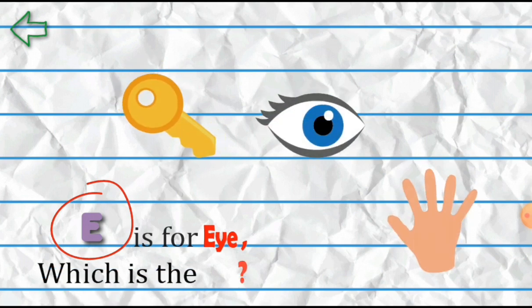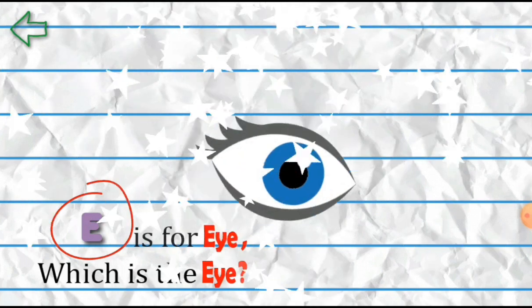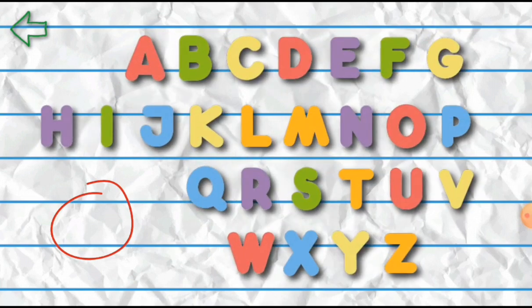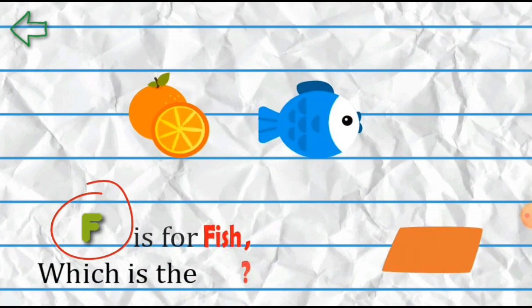E is for... F is for Fish. Which is that? Fish.